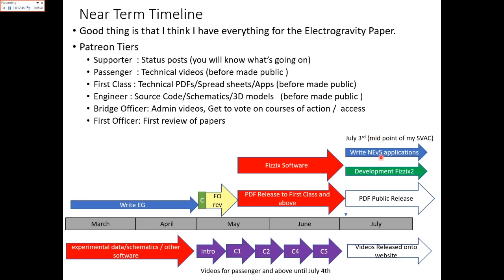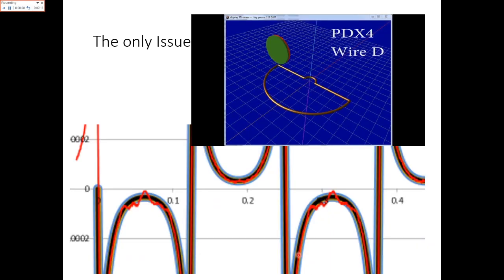After that paper is released, then we go into writing the new electromagnetism v5 applications paper and start development on the physics 2 software. The physics 2 software will be modeling three-dimensional solids. The original physics software just does filamentary wires and point charges - it's very simple but it's enough to get the job done. After July 3rd, all of these videos will be released. I will release them onto the distinti.com website and we will link to them.